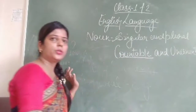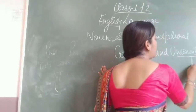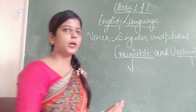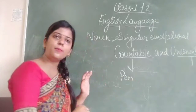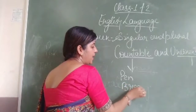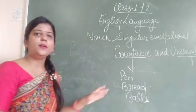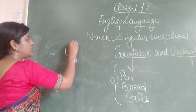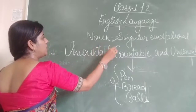Countable means the things which can be counted, and uncountable means the things which cannot be counted. For countable nouns, suppose you have a pen — you can count pens. You can count bread, you can count balls. So all these things come under countable nouns.